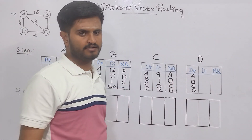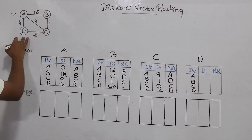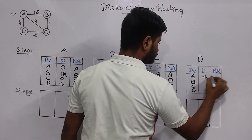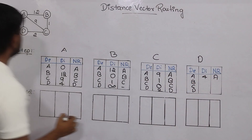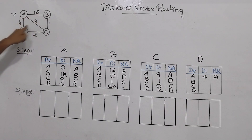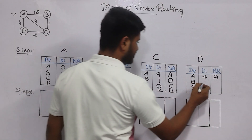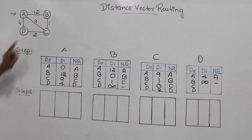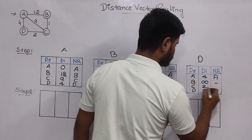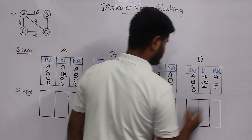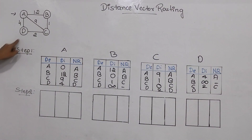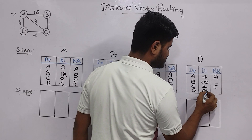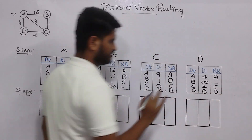Now let's fill the D routing table. From D to A, you can move with distance 4. From D to B, there is no direct connection, so you write infinite. From D to C, it is 2 and you remain at C. From D to D, there is no cost so the distance value will be 0, and you are at D only.